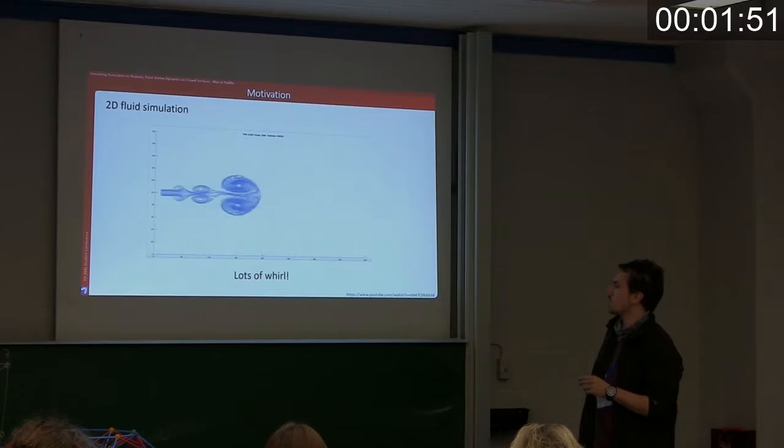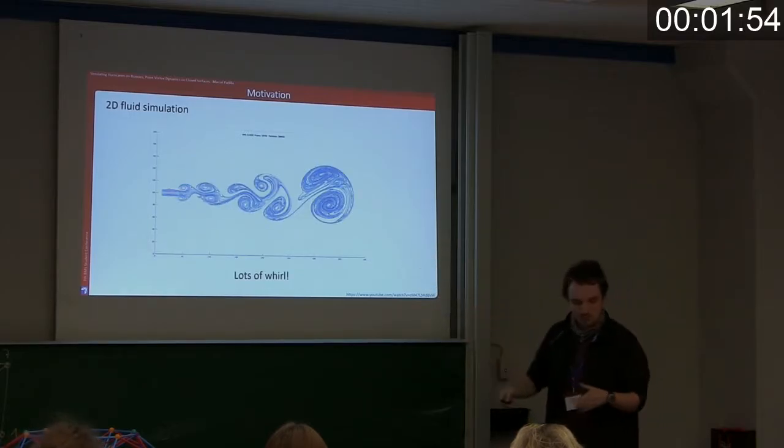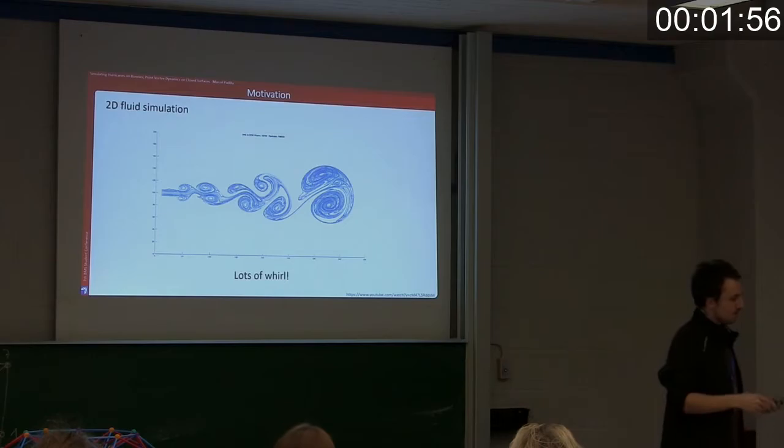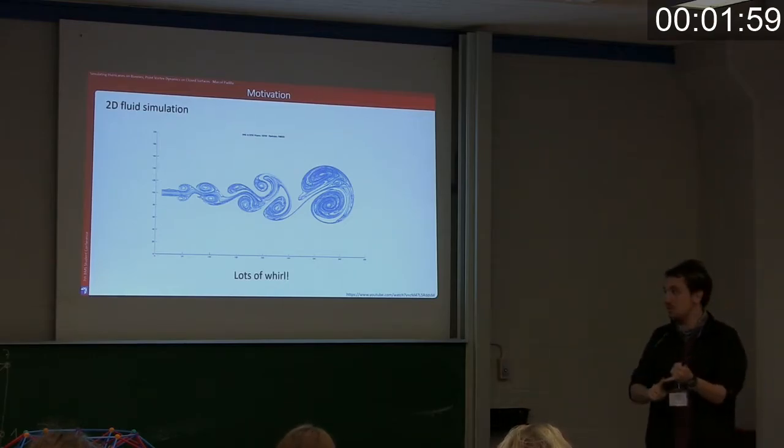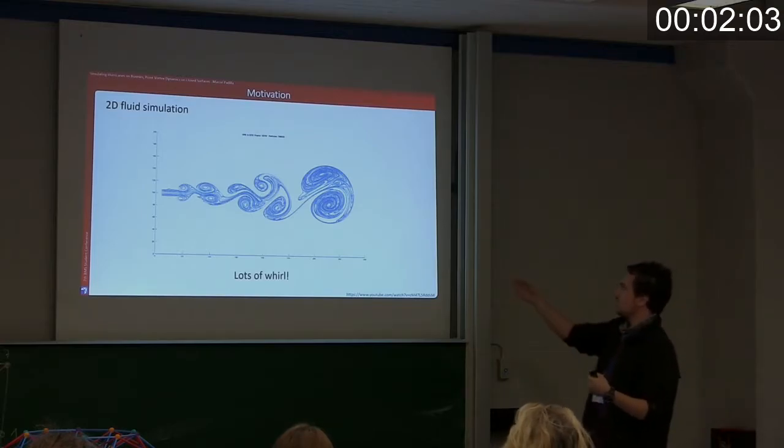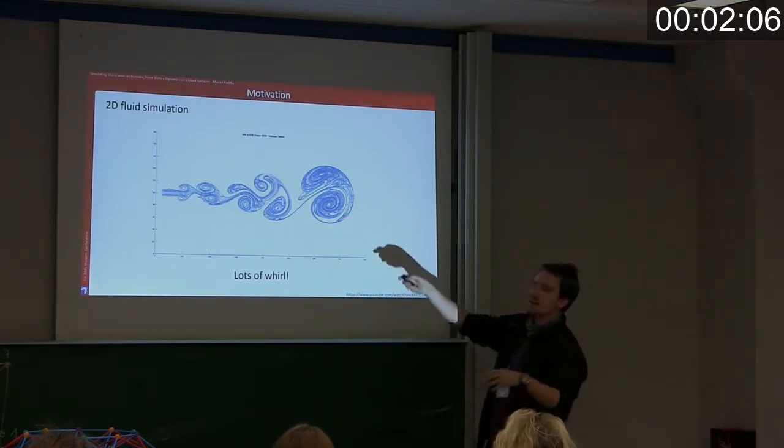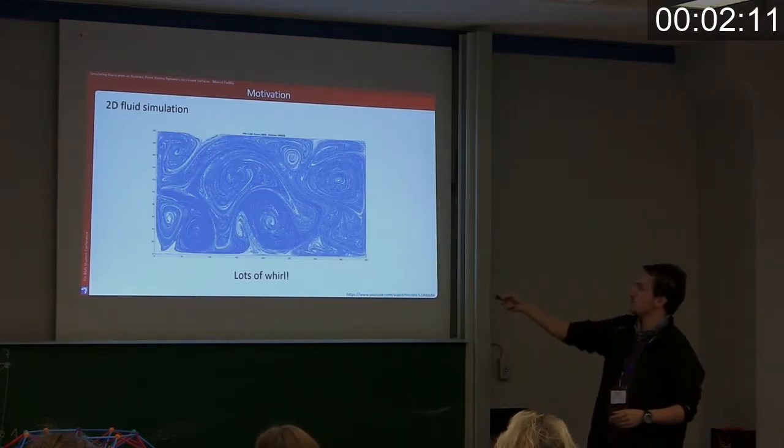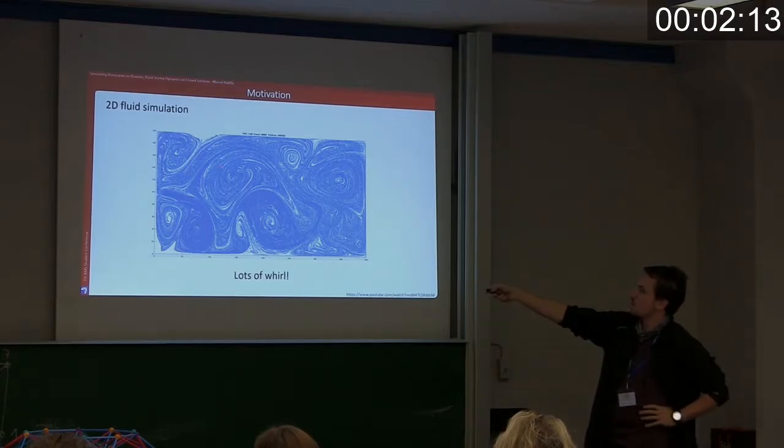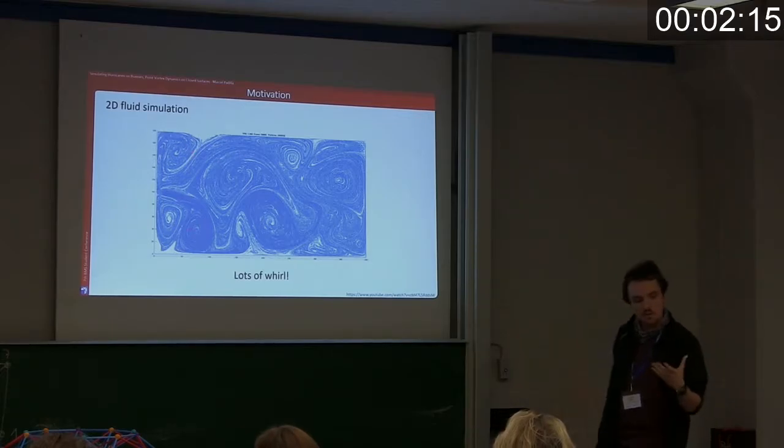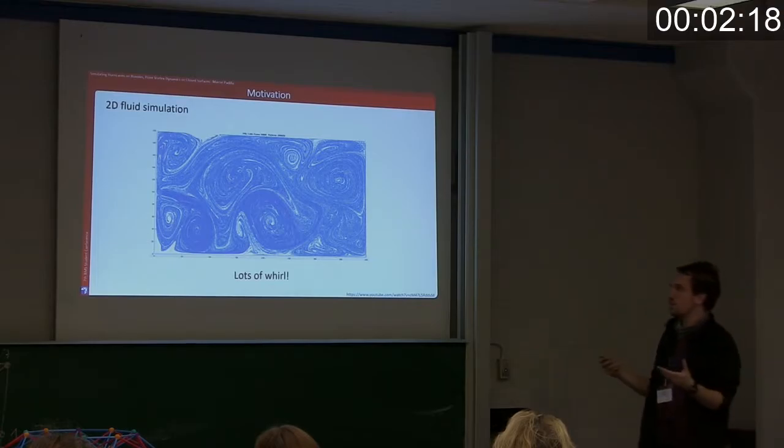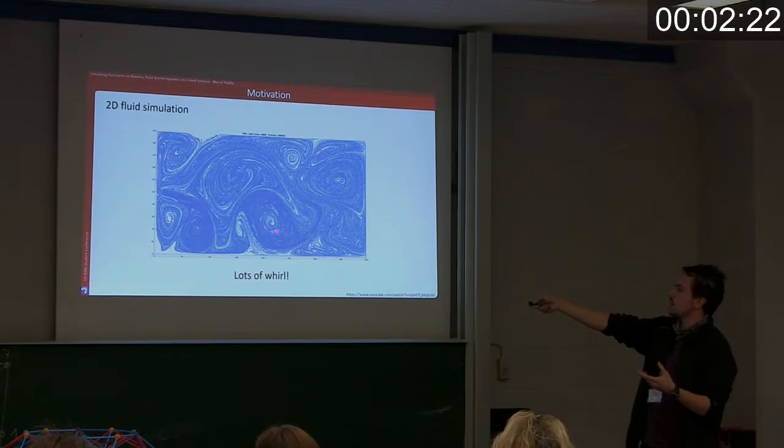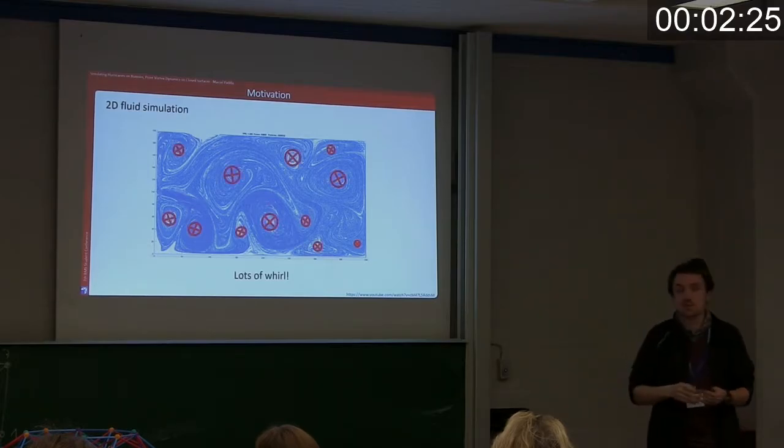If we stop the simulation and we try to describe the picture, we can either describe the picture by telling me the velocity field at every point, or you describe the picture to me by telling there's this vortex here and it kind of has the strength here. We call this the vorticity. I think it's more natural to describe this image, the velocity field, by talking about these vortices, and this is exactly what we want to do.